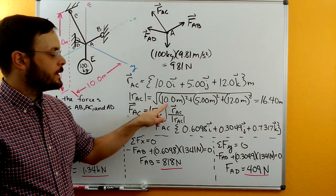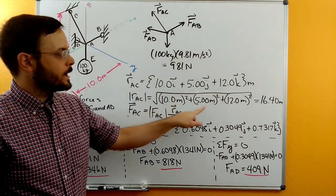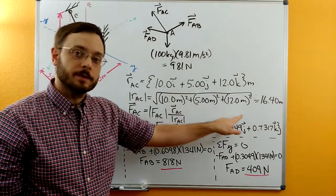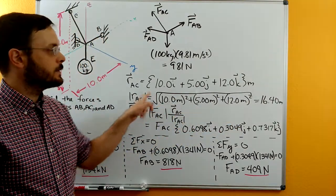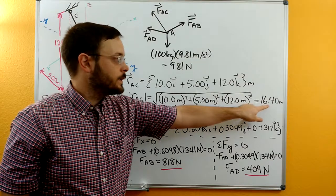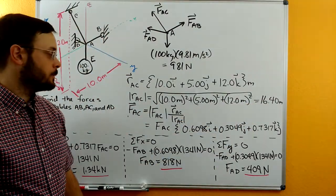We can do this by taking the 10 meters squared, plus the 5 meters squared, plus the 12 meters squared, adding it all together, taking a square root. We get that the length of the cable is 16.40 meters.